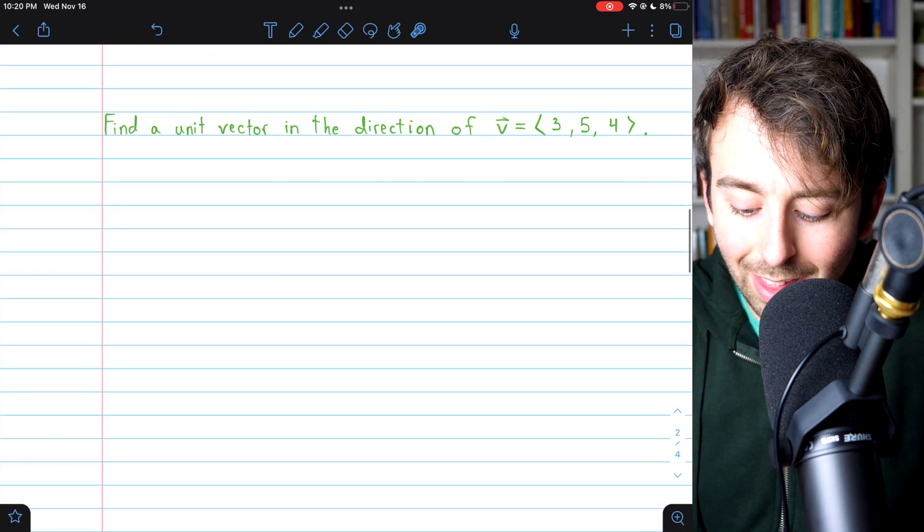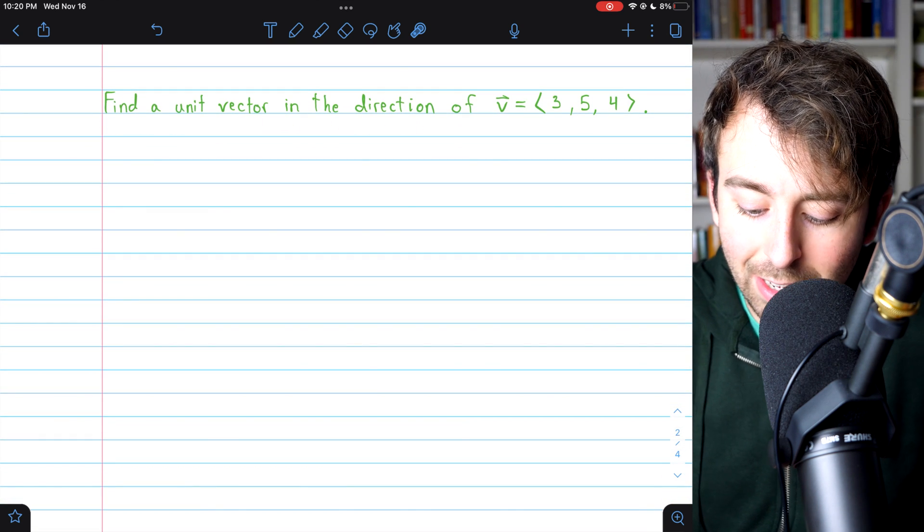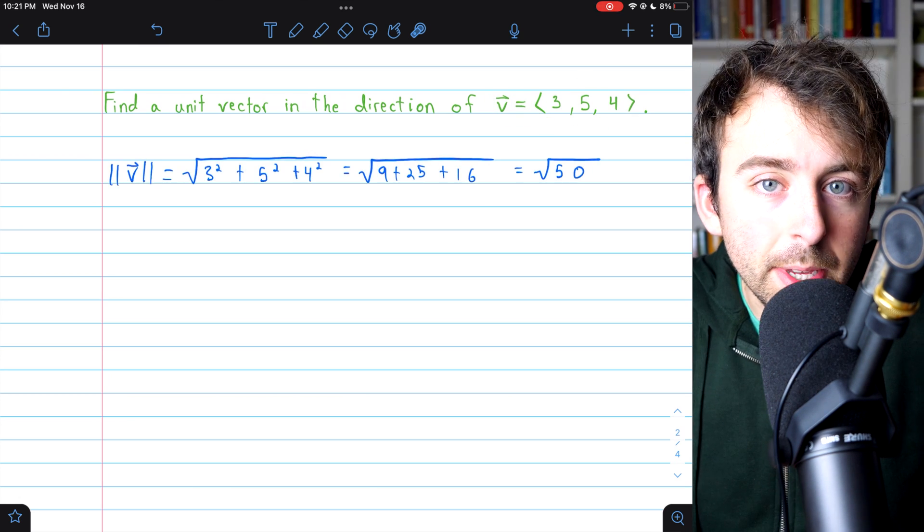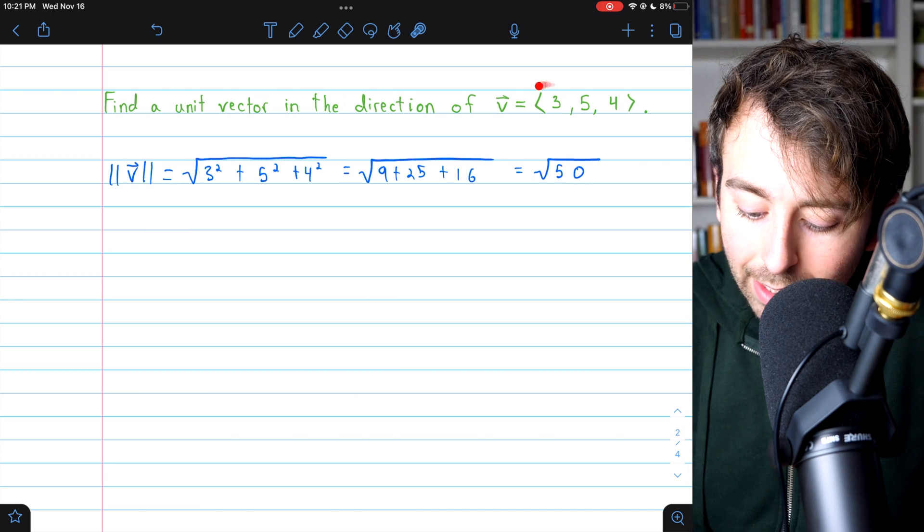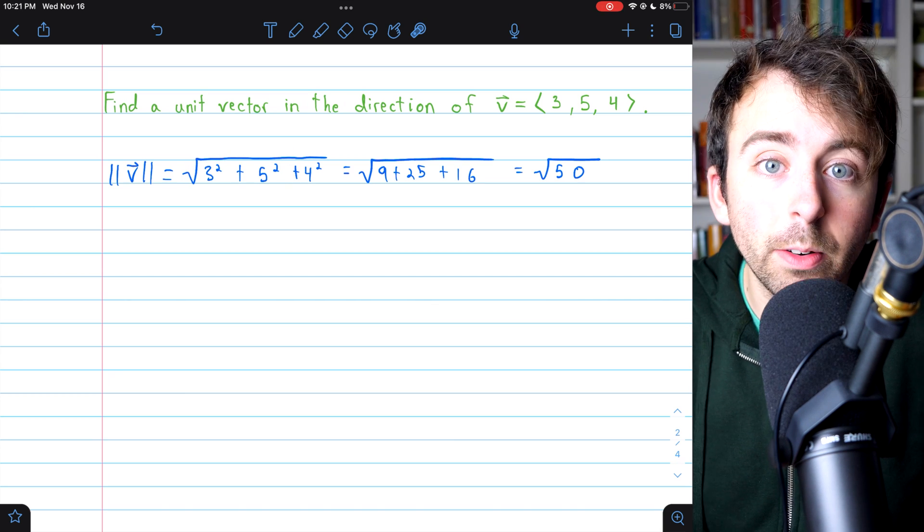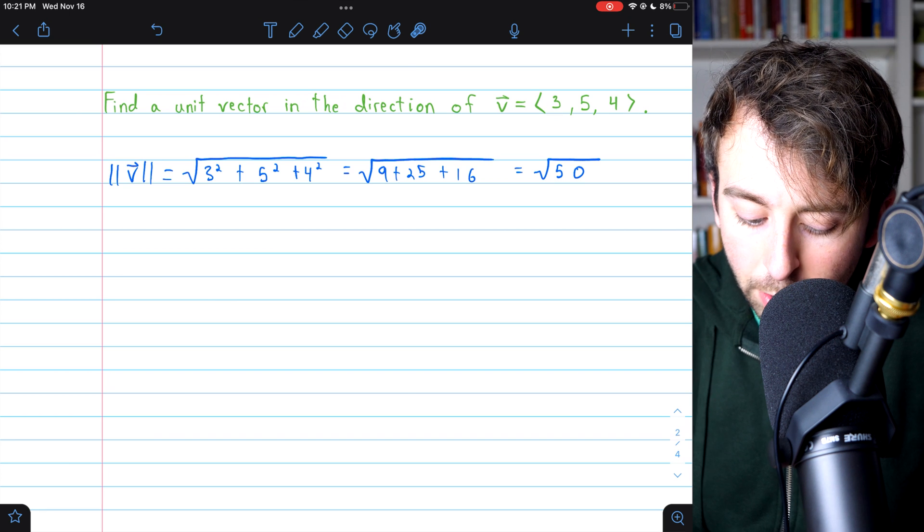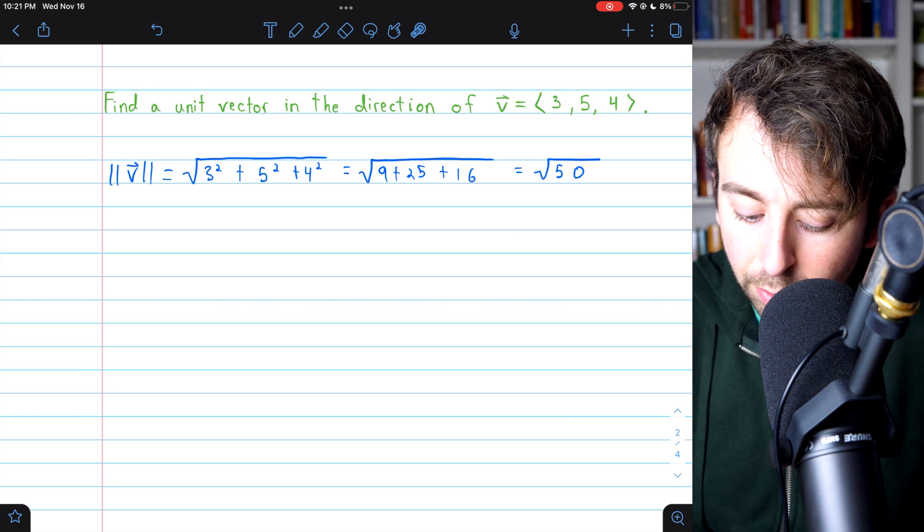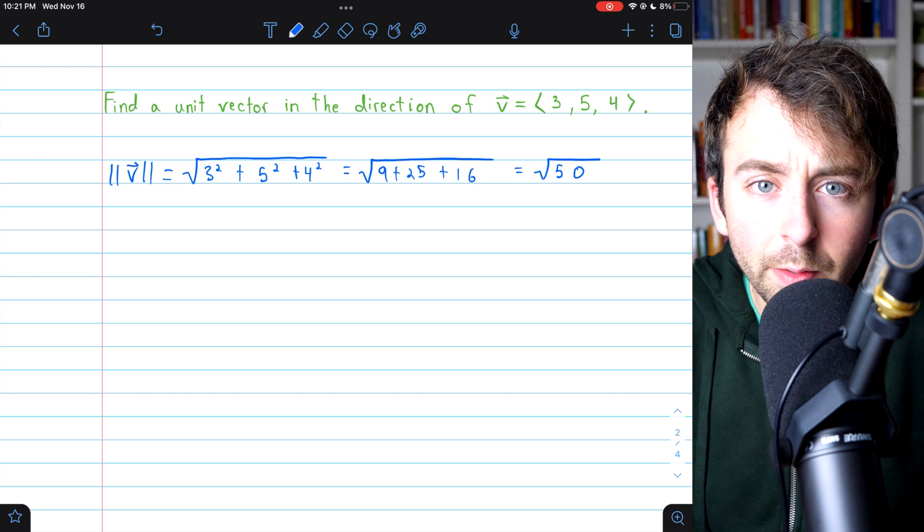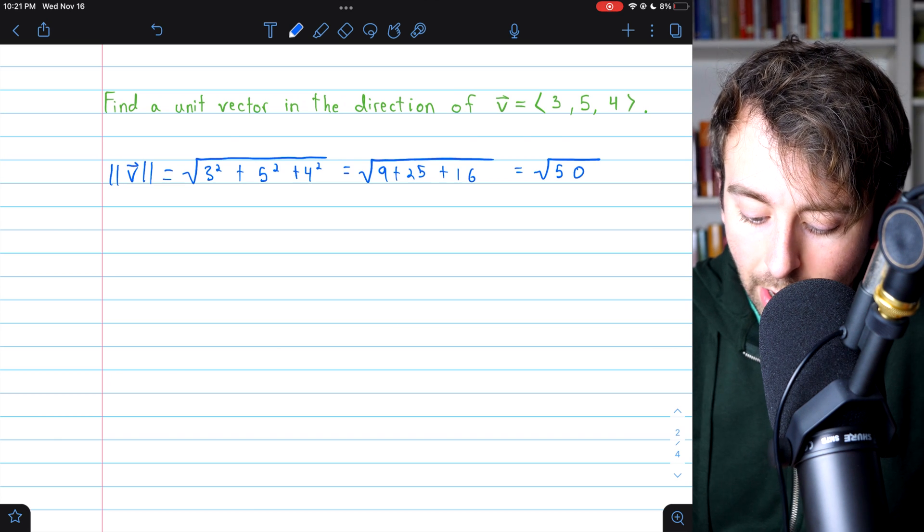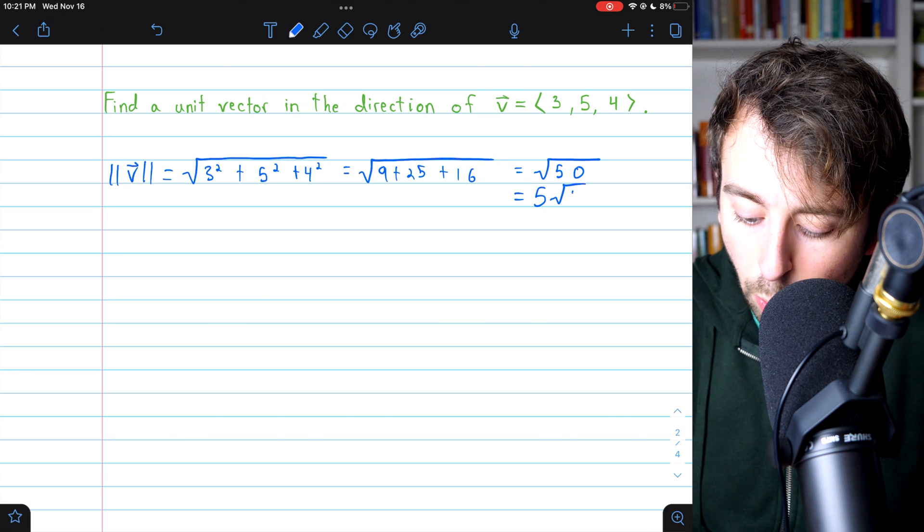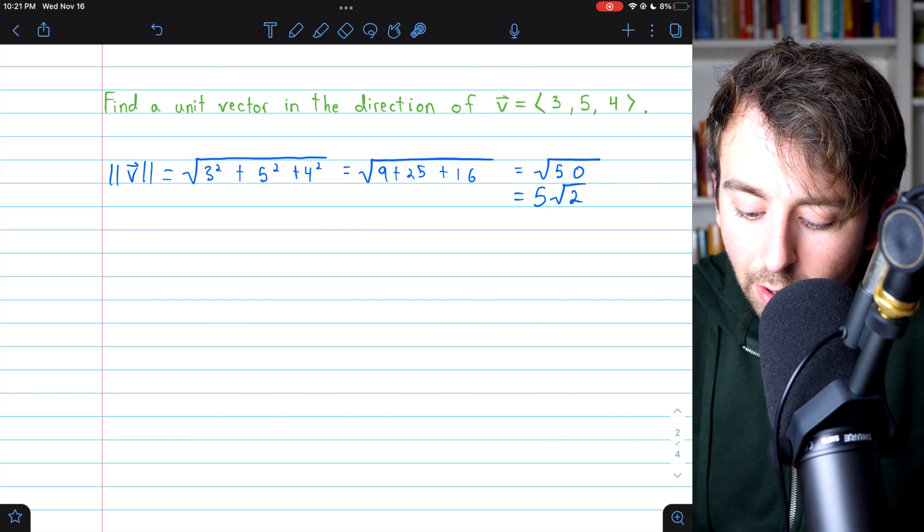Let's do another example with three dimensions. Find a unit vector in the direction of v, where the three components are 3, 5, and 4. Again, we have to begin by calculating the magnitude of our vector v. We take the square root of the sum of the squares of v's components. That's the square root of 3 squared plus 5 squared plus 4 squared, which is square root of 50. 50 is 25 times 2, so we could pull that square of 25 out of this and simplify it to 5 times the square root of 2. That's the magnitude of the vector v.